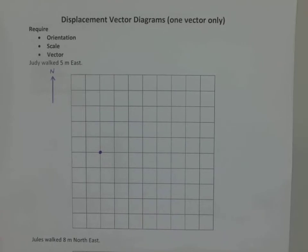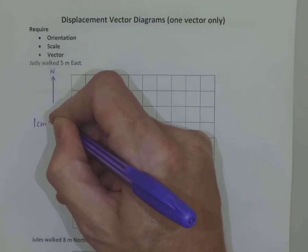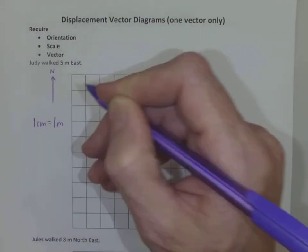Now we need a scale. We're moving five meters east. We've got a grid of 10 by 10 squares. This grid conveniently has one centimeter squares. So I might say for my scale that one centimeter equals one meter.